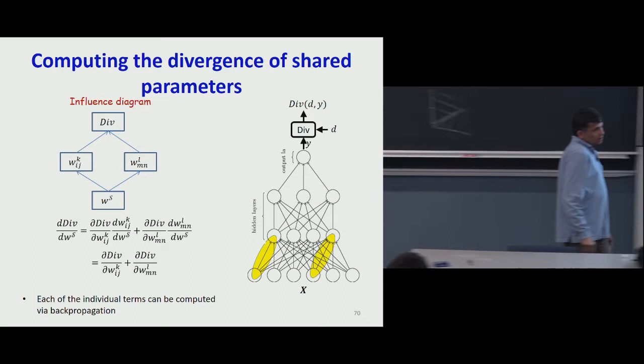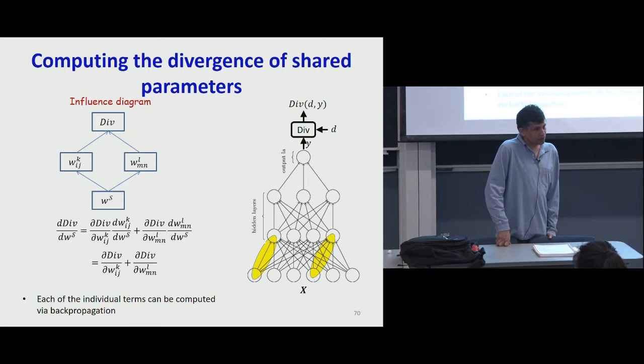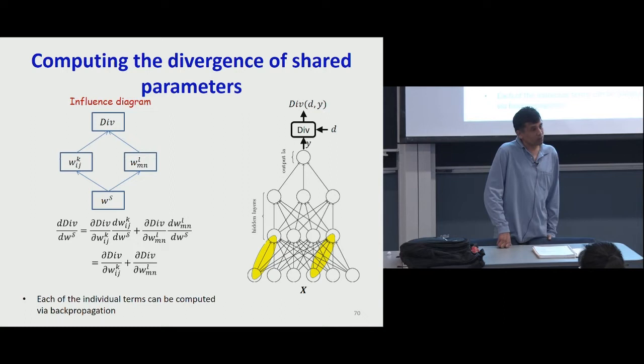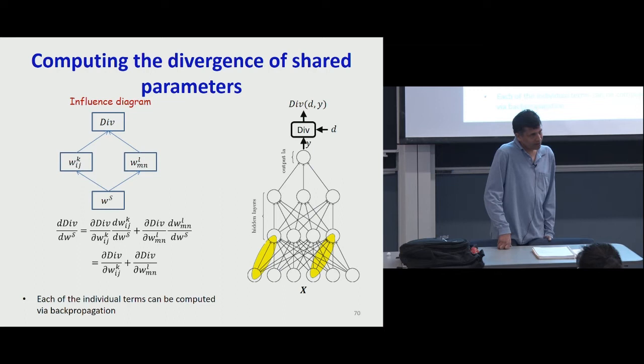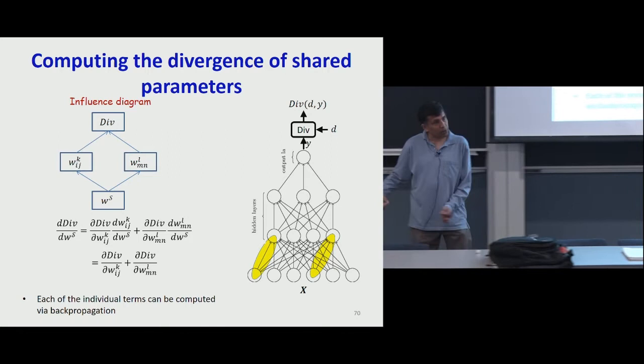A student asks whether parameter sharing makes a difference for universal approximation. When we say neural networks are universal function approximators, we're speaking of what they are capable of — it doesn't mean any specific network can model any given function. That's a capacity statement, not a statement about individual networks.